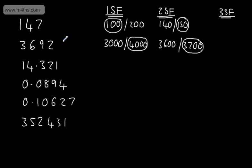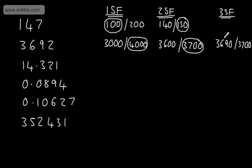My choices would be 3,690 or 3,700. So to the nearest 10, that is going to be 3,690.